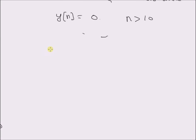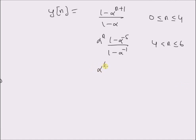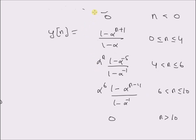Therefore the final output y[n] is: 0 for n less than 0; (1 - alpha^(n+1)) / (1 - alpha) for 0 ≤ n ≤ 4; alpha^n · (1 - alpha^(-5)) / (1 - alpha^(-1)) for 4 < n ≤ 6; alpha^6 · (1 - alpha^(-(11-n))) / (1 - alpha^(-1)) for 6 < n ≤ 10; and 0 for n greater than 10. This structure gives the convolution output for different intervals of the discrete time index n, calculated when the overlap between x[k] and h[n-k] changes with the value of n.